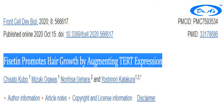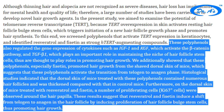TERT stands for telomerase reverse transcriptase. Telomerase reverse transcriptase is an enzyme that re-lengthens telomeres. When more TERT is produced in the skin, it elongates the telomeres present in the stem cells of your hair follicles. As a result, stem cells that were not multiplying earlier start multiplying again. Scientists were interested in knowing how we can increase the production of TERT in the skin and what happens when we do.